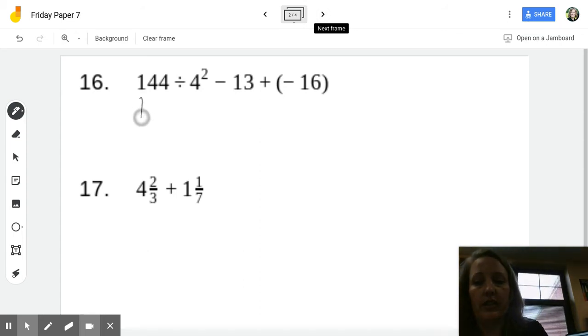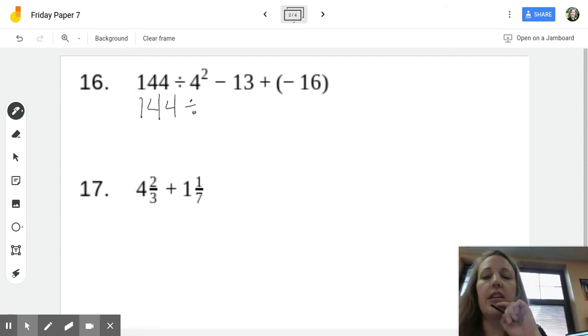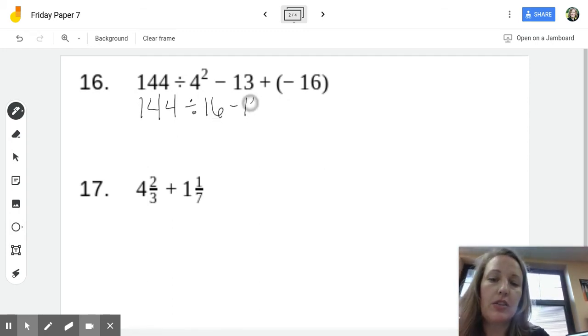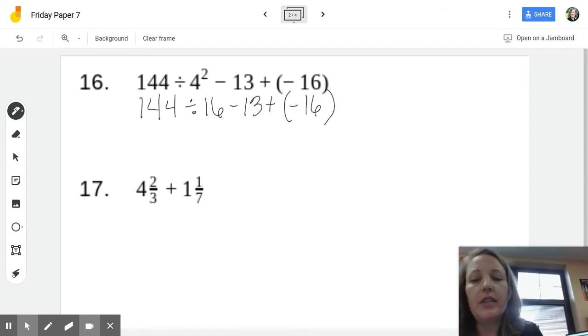144. Okay, divide that by. Let's go ahead and evaluate that exponent. 4 squared is not 8. What is it? Yep, 16 minus 13 plus a negative 16. Now, divide, subtract, add. Let's divide.